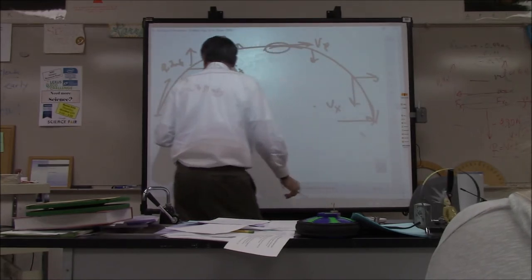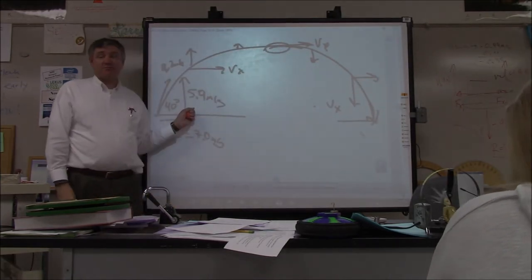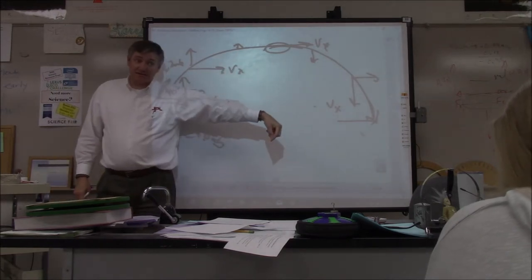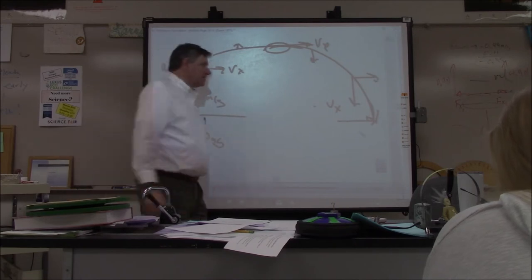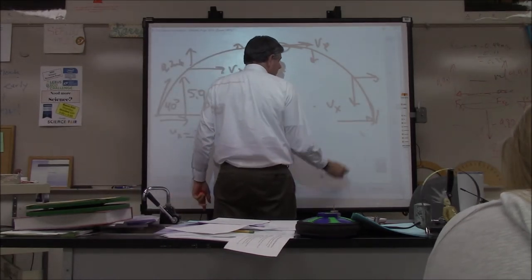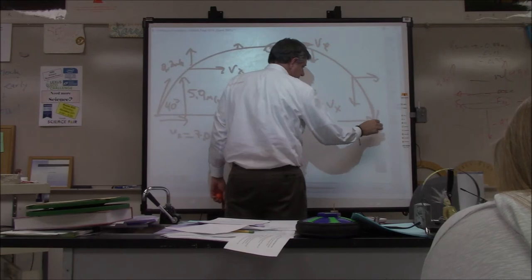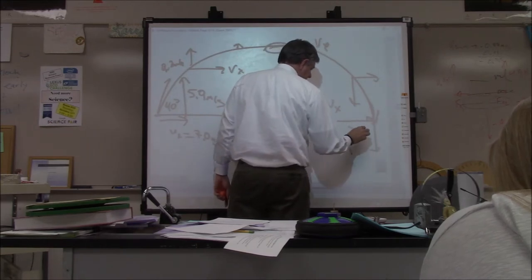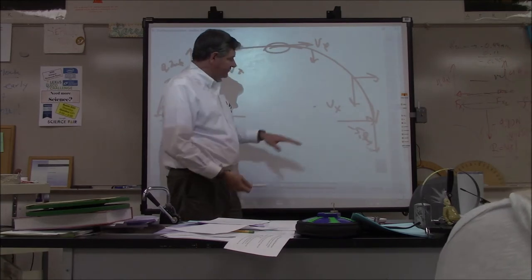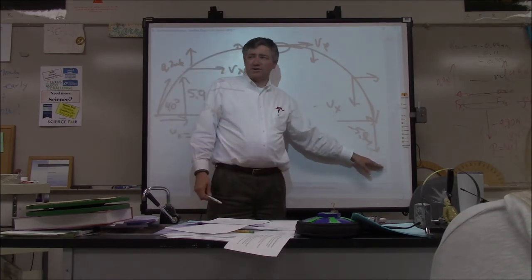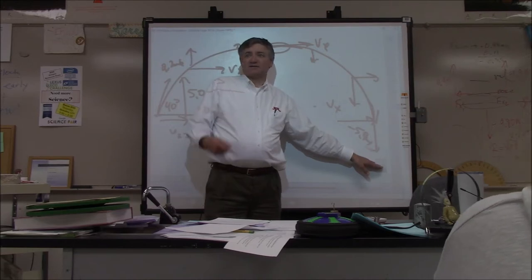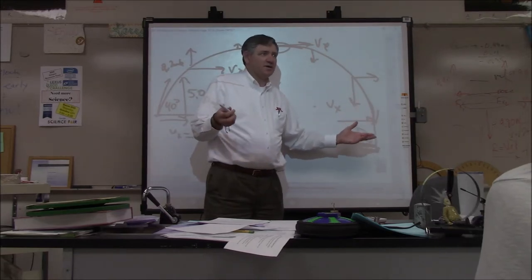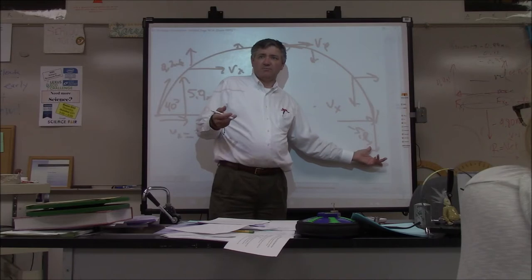After it reaches the apex, the velocity vectors grow negative and get larger in magnitude. If it launches at positive 5.9 and returns to the same height, the vertical component on landing is negative 5.9. The miracle of miracles: if I find the resultant of Vx and Vy at landing, I get 9.2 meters per second — the same as the launch speed.